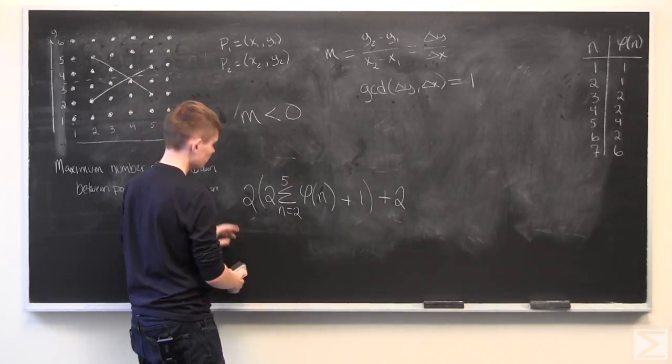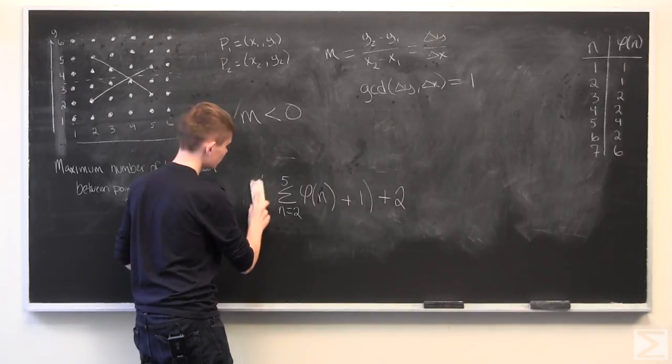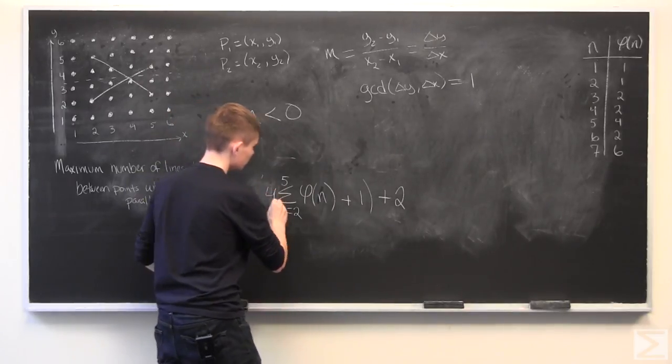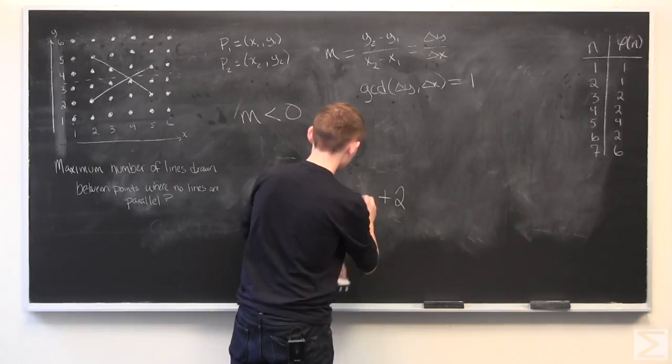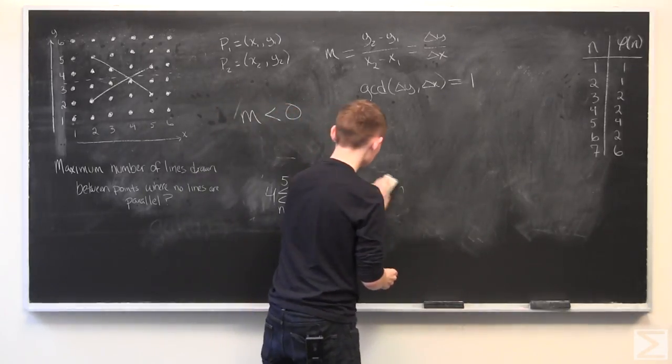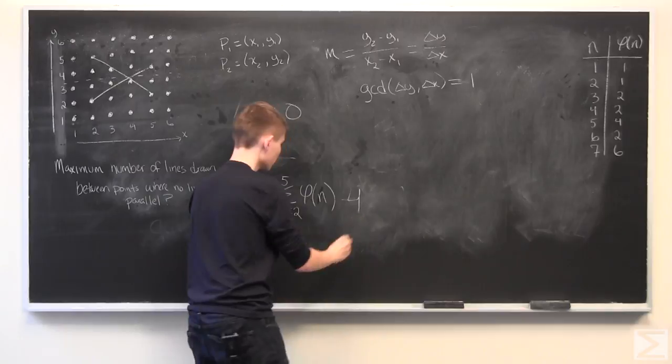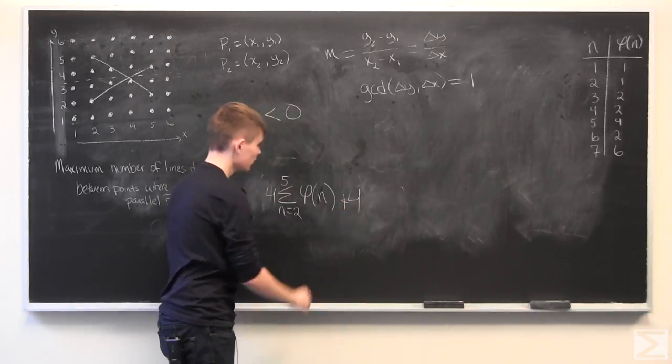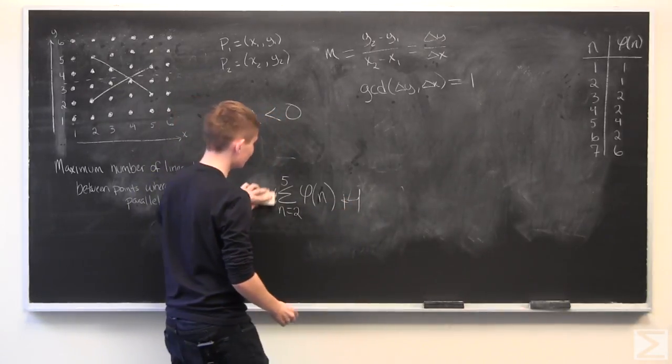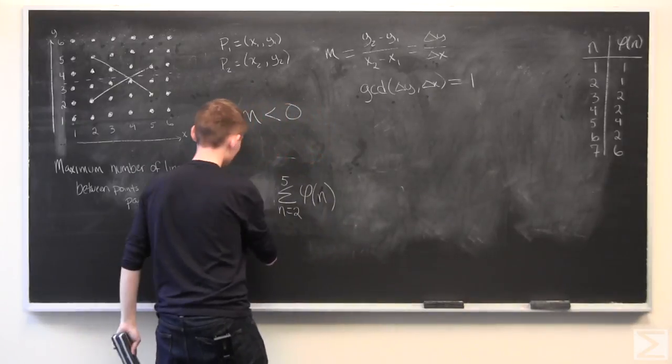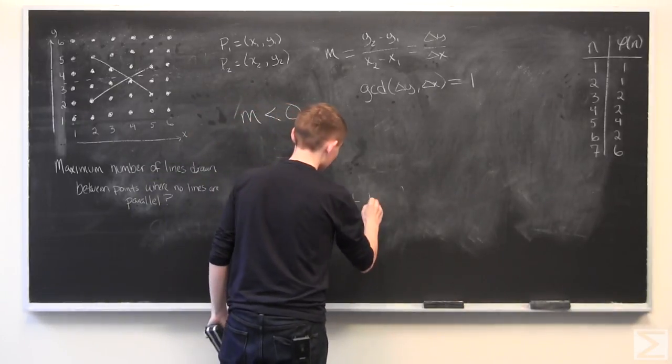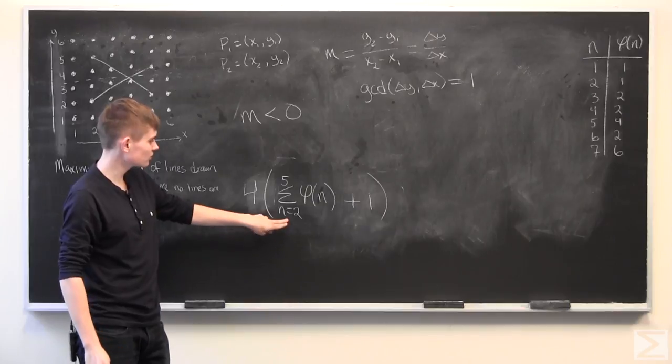We can multiply or distribute the two in. We'll get a 4 here and a 2 here. Add these two together and we get 4. And then we can distribute out the 4 again and get this.